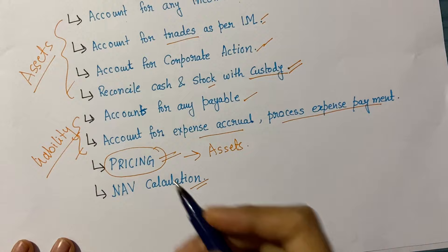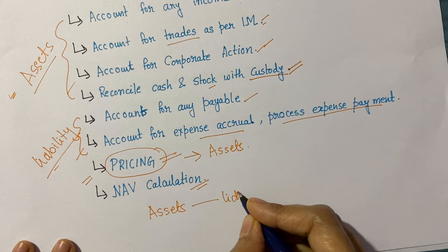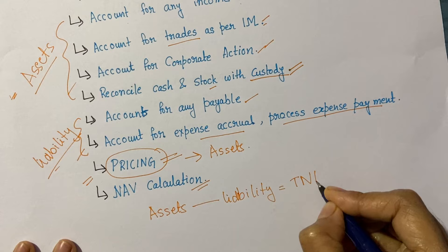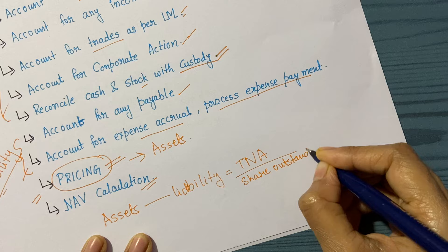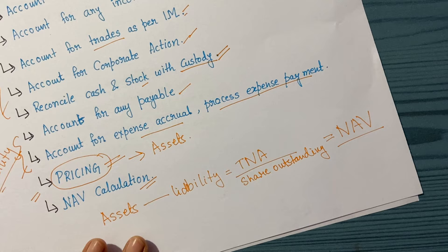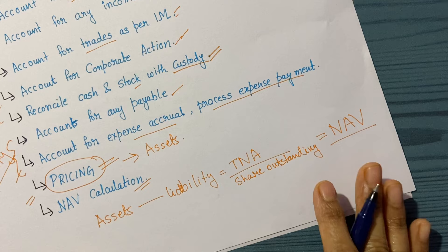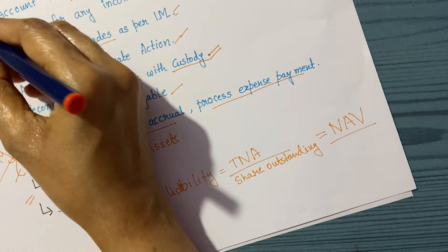So to summarize: income, trades, corporate actions, and pricing all arrive at the asset; payables and expense accruals arrive at the liability — which together create the TNA. Unit deals create the shares outstanding. Together these allow us to calculate the NAV. This has been a very superficial overview of how a fund accountant calculates the NAV. In the next video, I will create an example fund and show how NAV is calculated based on all these components, then go further into detail on how each component is evaluated. Thank you very much.